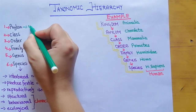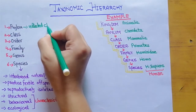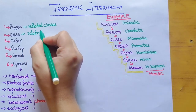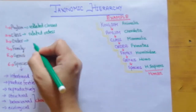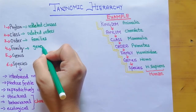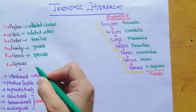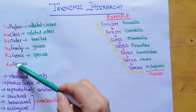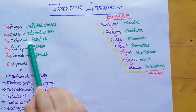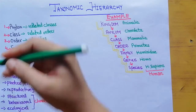Phylum contains related classes. Classes contain related orders. Orders contain related families. Families contain related genera. And genus contains related species. So going upward: related species make a genus, related genera make a family, related families make an order, related orders make a class, related classes make a phylum, and related phyla make a kingdom.